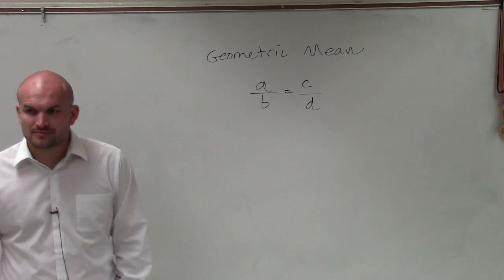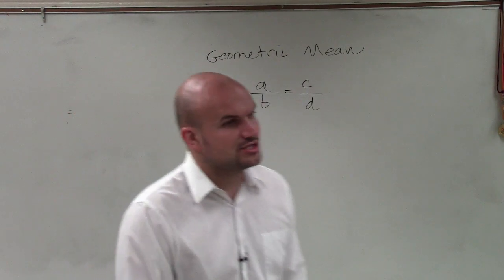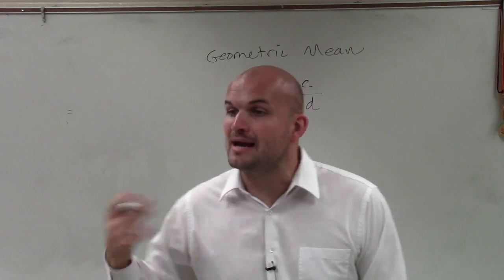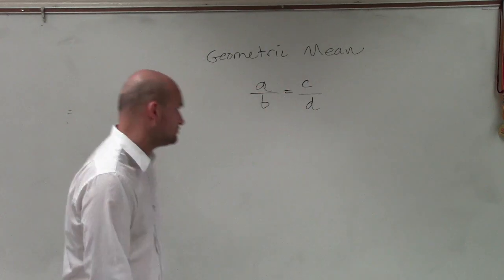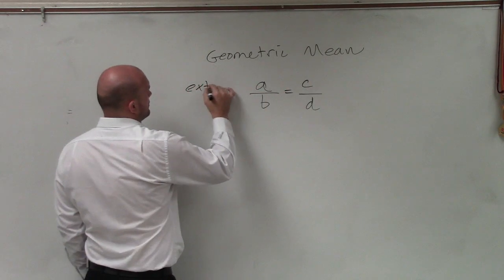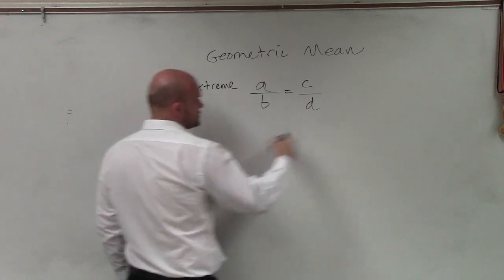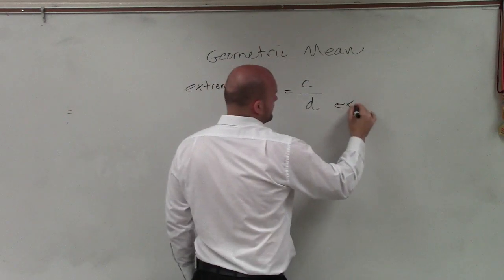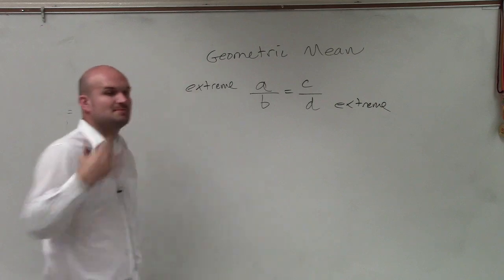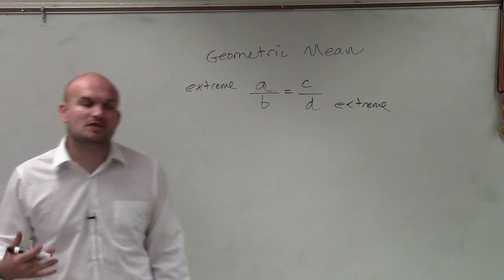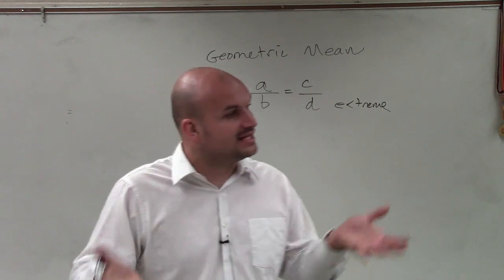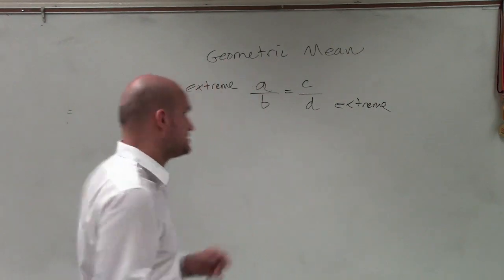Now, when we're talking about ratios and proportions, we have two things: what we call extremes and means. That's an extreme. That's an extreme. And remember, when we do cross multiplication, what we're doing is we're multiplying the extremes and the means.